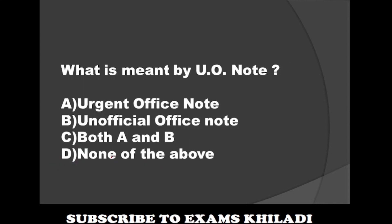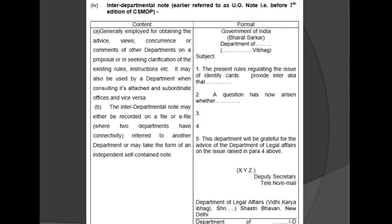Question: What is meant by UO note? Option A: Urgent Office Note. Option B: Unofficial Office Note. Option C: Both A and B. Option D: None of the above. The correct answer is Unofficial Office Note. It is now referred to as an Interdepartmental Note — earlier it was called the UO note or Unofficial Office Note.